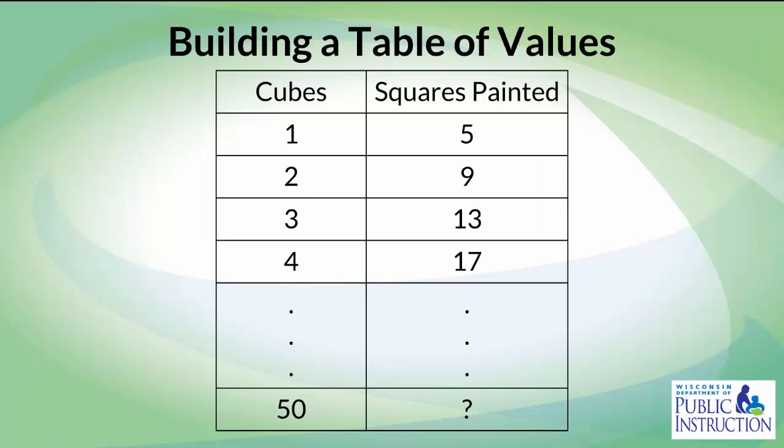So students may have to look at some alternative ways. Here's one alternative. Students may want to build a tower. So a teacher can introduce the idea of looking at tables of values to help organize the numbers and help students to see the pattern. Students could expand a tower like this to see how many squares they would have to paint if the towers were 50 cubes high.